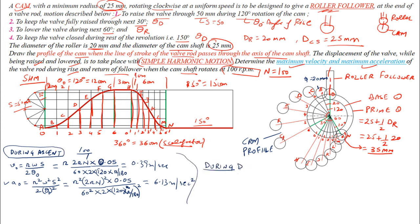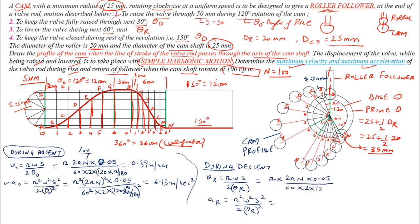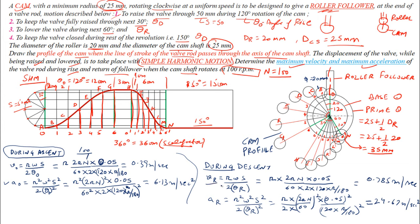For the descent, the same formulas apply but using the angle of return (60°) instead of the angle of rise. After substituting values, we get the maximum velocity and maximum acceleration during descent. This completes the solution for the cam and follower moving with simple harmonic motion.